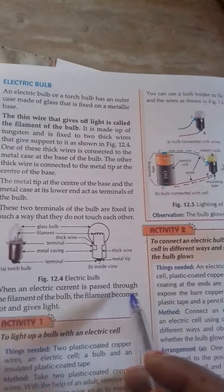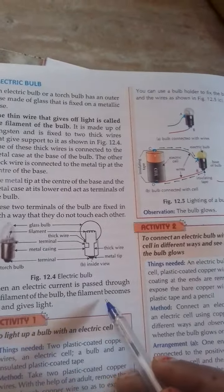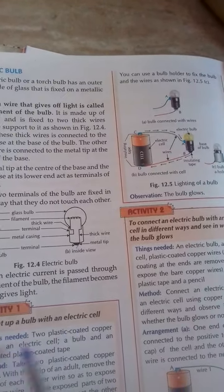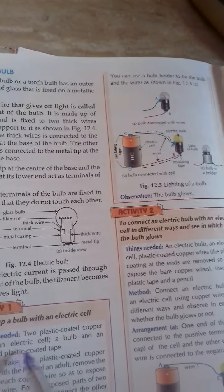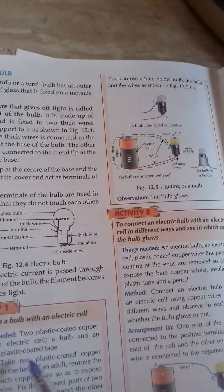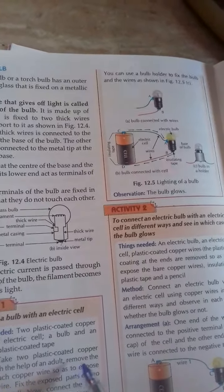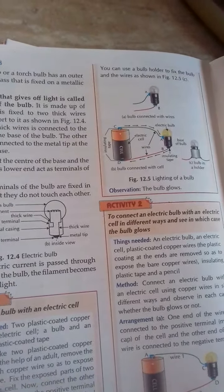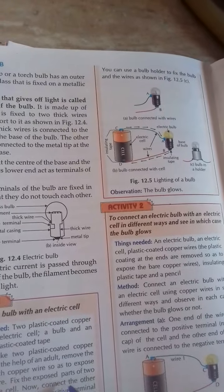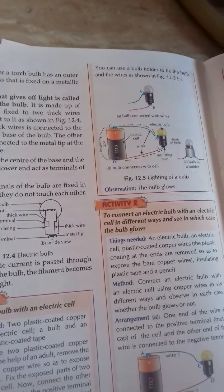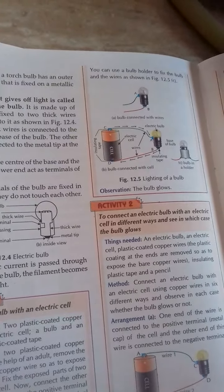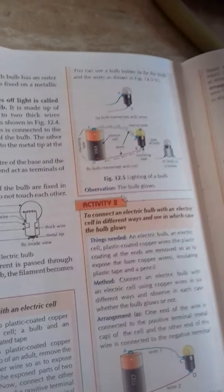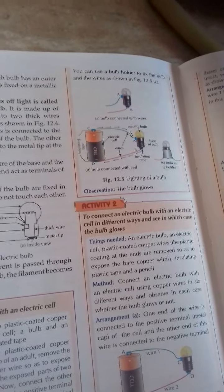When an electric current is passed through the filament of the bulb, the filament becomes hot and gives light. To light up a bulb with an electric cell, things needed: two plastic coated copper wires, an electric cell, a bulb, and insulated plastic coated tape. Method: take two plastic coated copper wires. With the help of an adult, remove the end of each copper wire so as to expose the bare wire. Fix the exposed part of the two wires to the cell. Now connect the other end of the first wire to the positive terminal and second wire to negative terminal of the electric cell by putting an insulating plastic tape as shown in position C and D in figure 12.5.